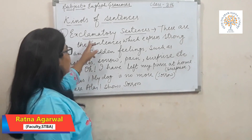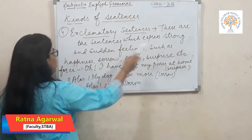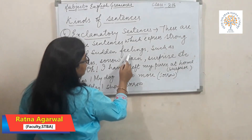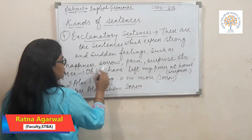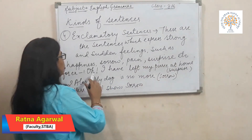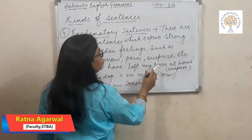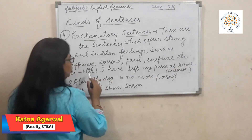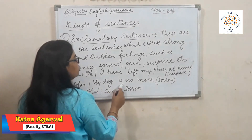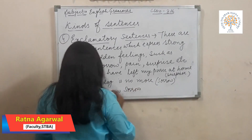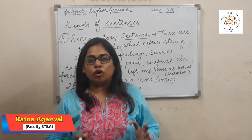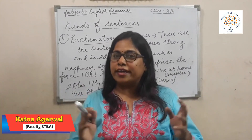Fourth is exclamatory sentences. These are sentences which express strong and sudden feelings such as happiness, sorrow, pain, surprise, etc. For example, 'oh, I have left my purse at home' — here 'oh' shows surprise. 'Alas, my dog is no more' — here 'alas' shows sorrow. These sentences are always followed by a mark of exclamation.